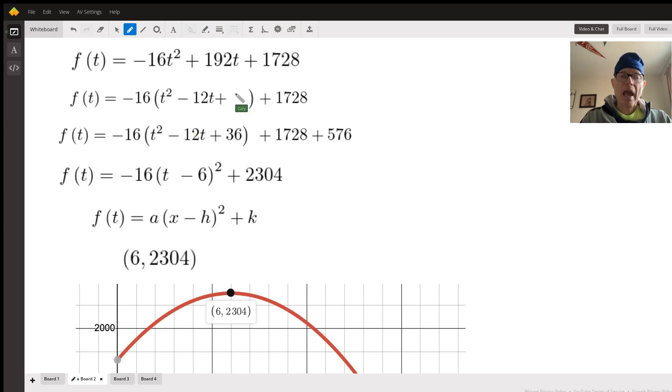Next, we want to add something here which will later make it possible for us to factor into a perfect square. So to do that, what we'll do is we'll take half of this term and square it. So half of negative 12 is negative 6, squared is 36. So we're going to put 36 right here, adding 36 there.